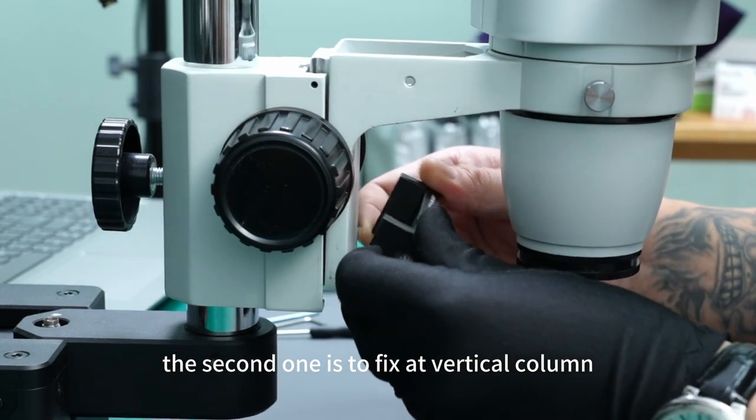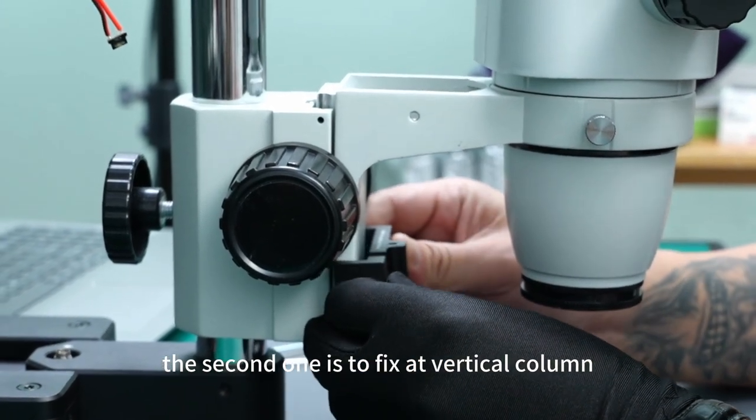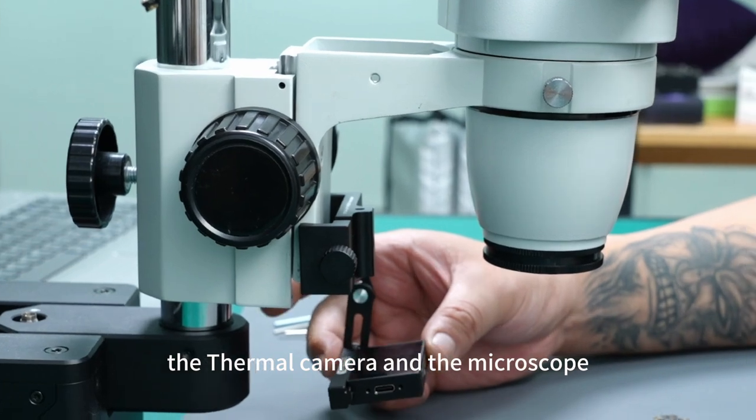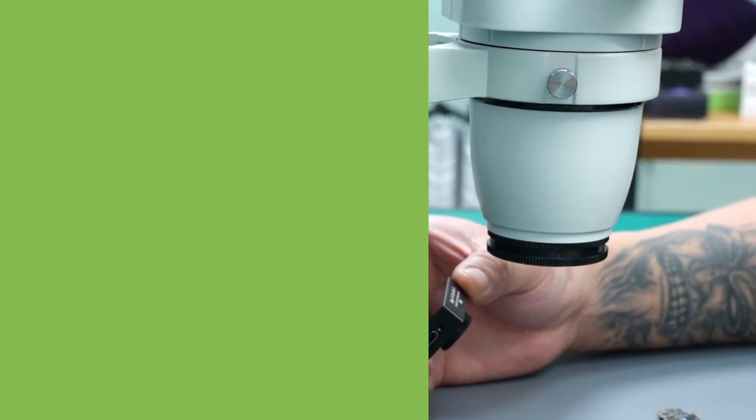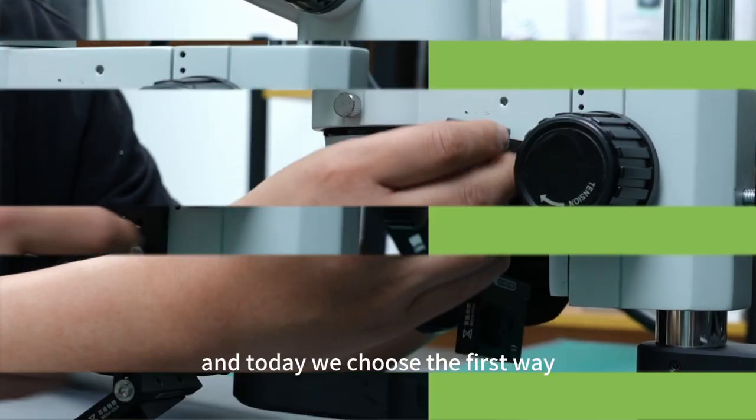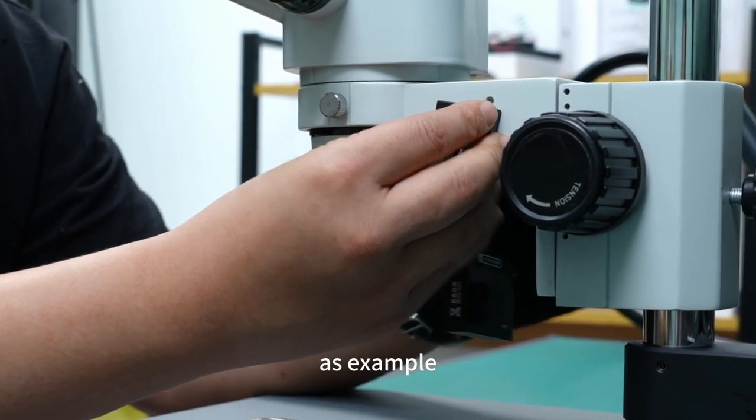The second one is to fix at the vertical column. This way ensures the thermal camera and the microscope capture images at the same time. Today we choose the first way as an example.